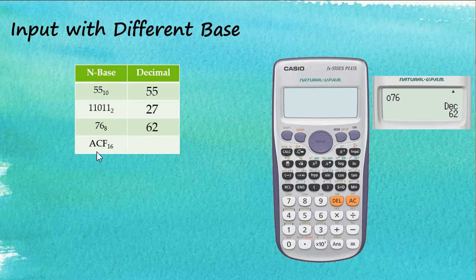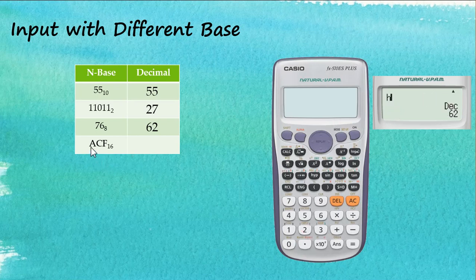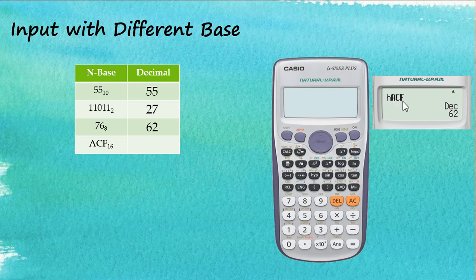The last one is base 16, which is hexadecimal. Shift, Base, Down — hexadecimal is number 2. The number is ACF. Remember, don't use Alpha, because when you use Alpha, what you key in becomes a variable, not a number. In this case, A, C, and F are numbers, so just tap A, then C, then F directly. Hexadecimal ACF, press equal — this equals 2767 in decimal. So ACF in base 16 equals 2767 in decimal.